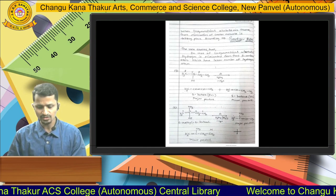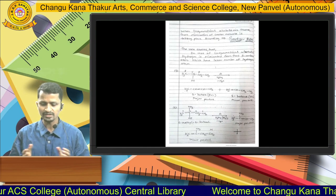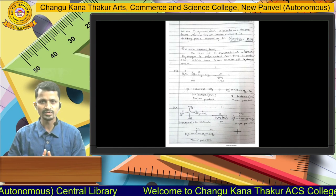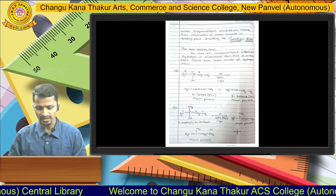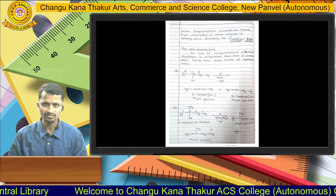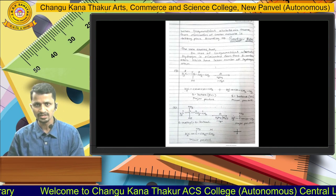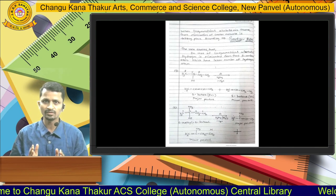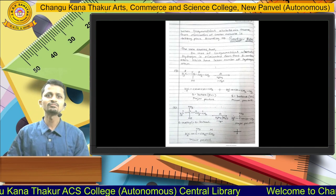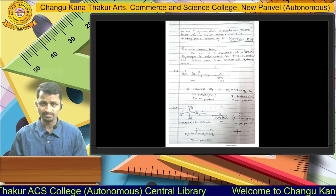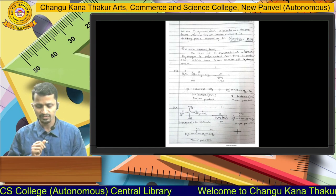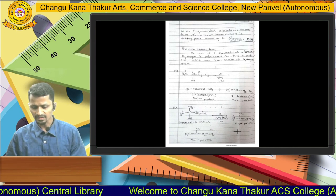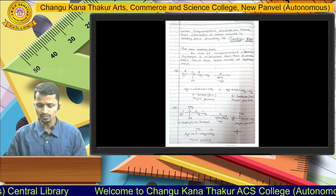The next example is 2-methyl-2-butanol, again treated with concentrated sulfuric acid. Here again two beta carbon atoms are present: the right side contains 2 hydrogen atoms and the left side contains 3 hydrogen atoms. According to the Saytzeff rule, hydrogen is removed from the carbon with fewer hydrogens — the right side — to give the major product, 2-methyl-2-butene.